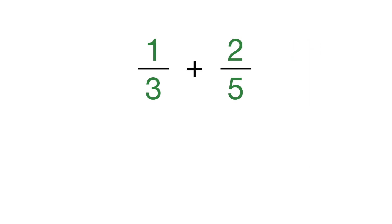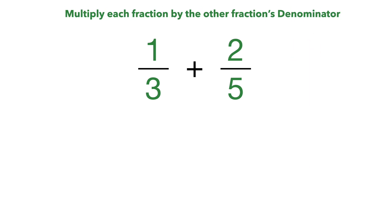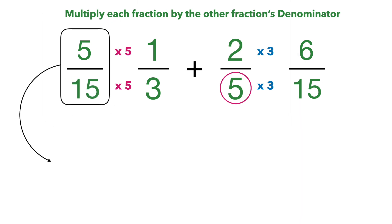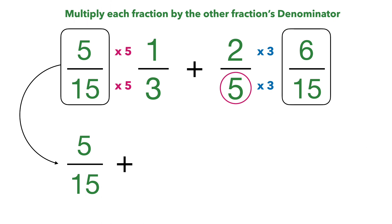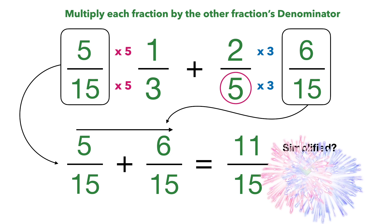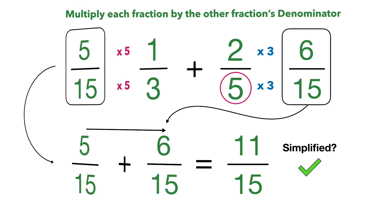Let's do another example: 1 third plus 2 fifths. We're going to do the same thing — multiply each fraction by the other fraction's denominator. So we multiply 2 fifths by 3: 2 times 3 is 6 and 5 times 3 is 15. Then for 1 third, we multiply by 5: 1 times 5 is 5 and 3 times 5 is 15. We now have common denominators of 15. So we put 5/15ths and add 6/15ths. Add the numerators: 5 plus 6 is 11, keep the denominator the same at 15. And this is also fully simplified, so we are done.